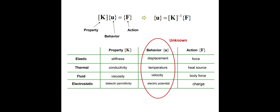Looking at each field variable: for elastic structural problems, the property is stiffness and the behavior is displacement, giving F = K × U as per strength of material. For a thermal problem, the property is conductivity (similar to stiffness), and temperature is the behavior U, with heat source as F. For fluid dynamic problems: viscosity, velocity, body force. For electrostatic: dielectric permeability, electrical potential, and charge. The finite element equation is always F = K × U.